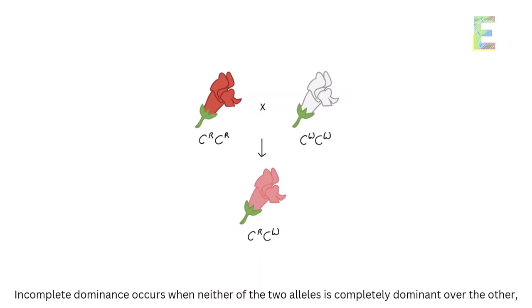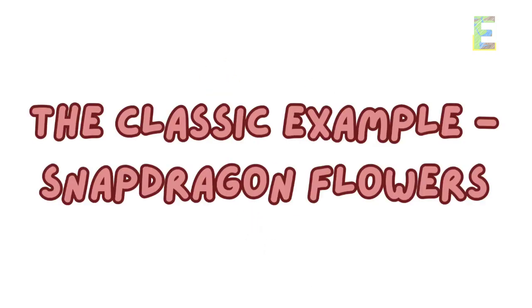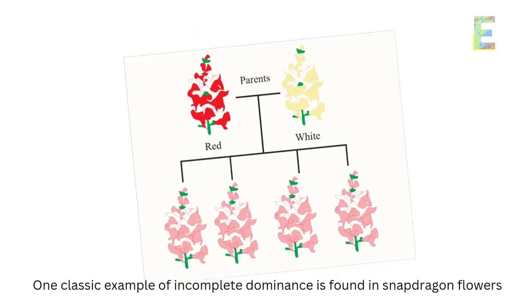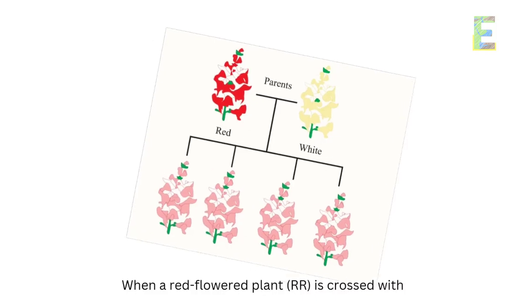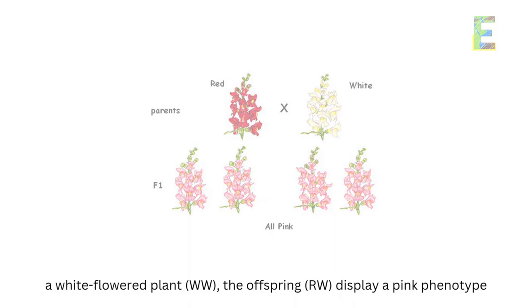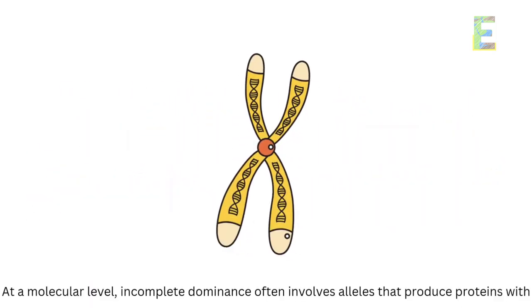The classic example: snapdragon flowers. One classic example of incomplete dominance is found in snapdragon flowers. When a red-flowered plant (RR) is crossed with a white-flowered plant (WW), the offspring (RW) display a pink phenotype. The genetics behind incomplete dominance: at a molecular level, incomplete dominance often involves alleles that produce proteins with different levels of functionality.